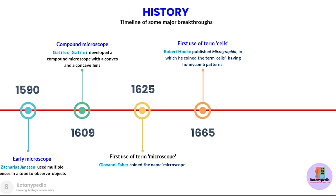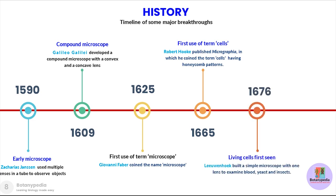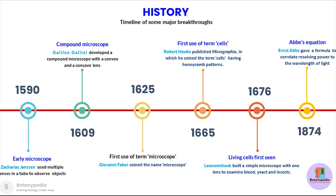In 1665 Robert Hooke published his work in Micrographia where he coined the term cells. He observed a honeycomb pattern and the term cells came from that pattern. In 1676 living cells were first seen by Leeuwenhoek, who built a simple microscope with one lens to examine blood, yeast, and insects. In 1874 Abbe's equation was proposed by Ernst Abbe, who gave a formula to correlate resolving power to the wavelength of light.